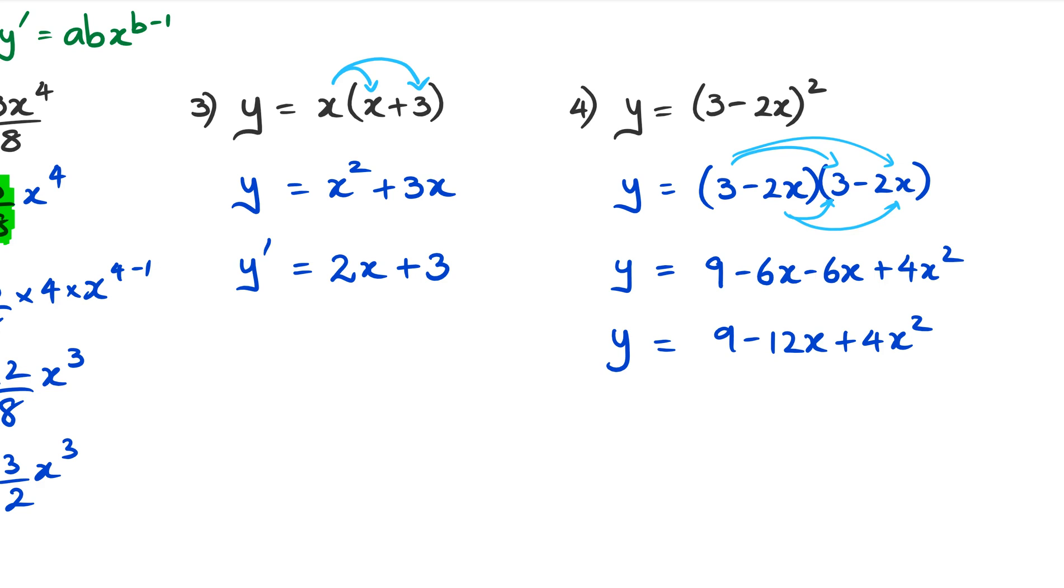In this case, what I've got is I've got 9 minus 6x minus 6x plus 4x squared. This simplifies to 9 minus 12x plus 4x squared. Now at this point I can differentiate. I've been using y dash before, but in this case I'm going to use dy/dx, and that's all right because that is still just another way of writing what the gradient is. So 9 when I differentiate becomes 0, so I don't have to worry about it. Negative 12x when I differentiate becomes negative 12, and then I've got plus 4 times 2 which is 8, and then 8x to the power of 1.